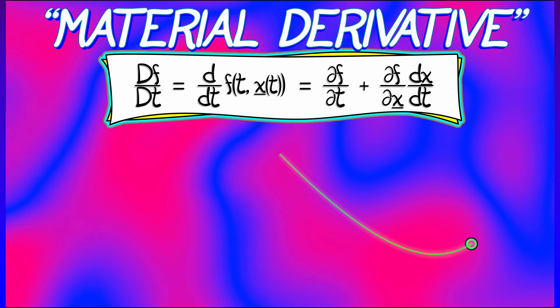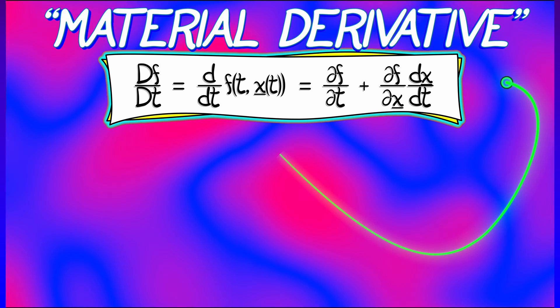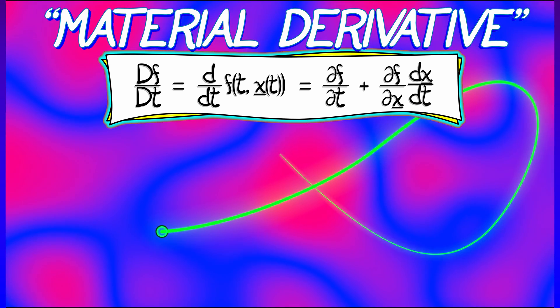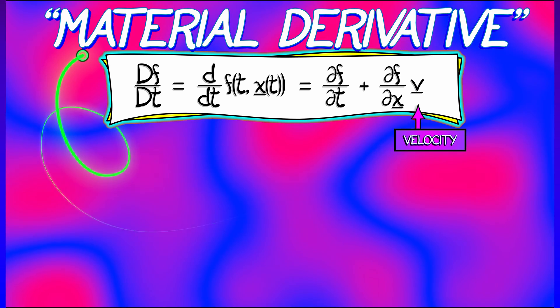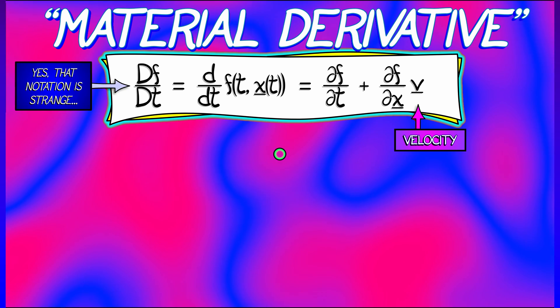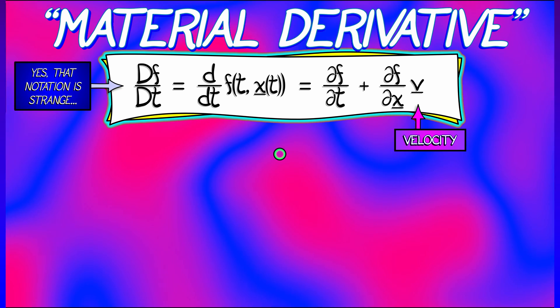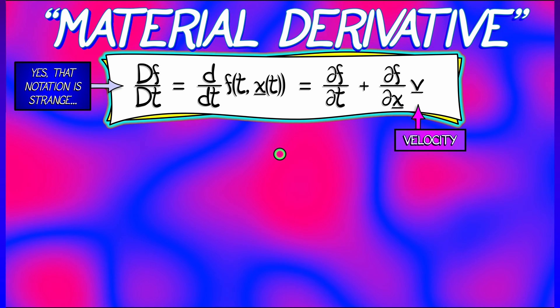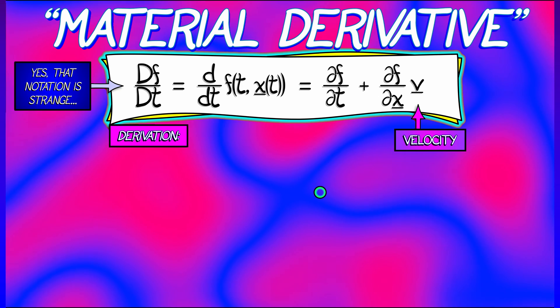One of the things that we're going to do to understand this is, first of all, replace that dx/dt term with v, the velocity of that particle. And yes, this notation is a little bit strange, that capital Df, capital Dt, whatever. Let's just roll with it and think about where this formula comes from. It's really just the chain rule.